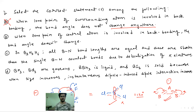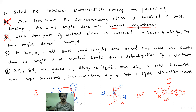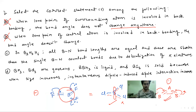Come to the second one. When the lone pair of the central atom is involved in backbonding, the bond angle does not change — this is a wrong statement. If the lone pair is involved, then in many cases the geometry changes and the bond angle is changed.